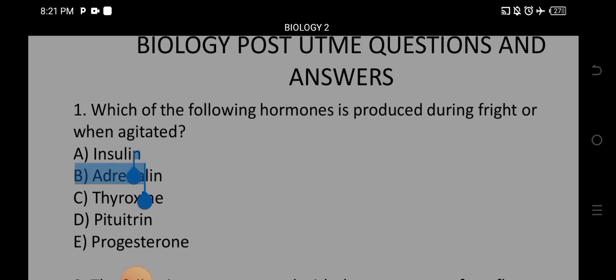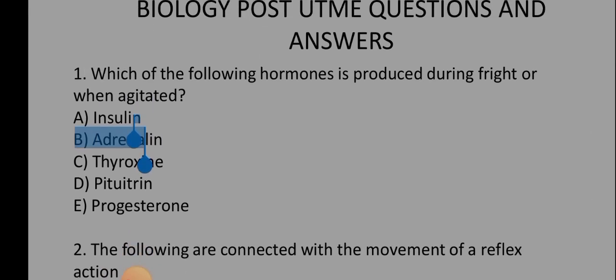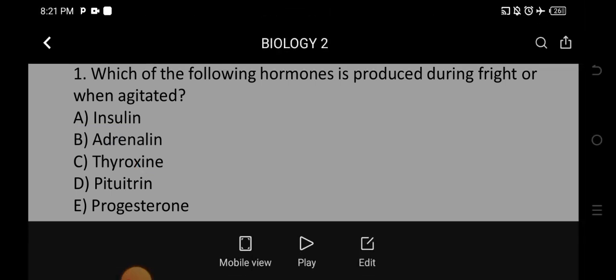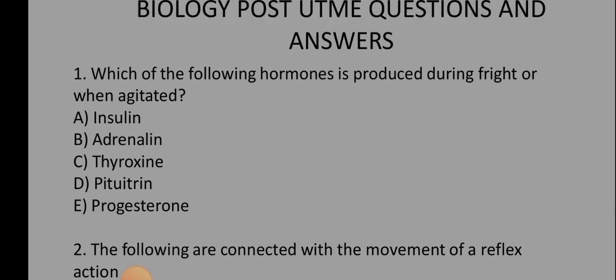Number one: which of the following hormones is produced during fright or when agitated? The correct option is option B, which is adrenaline. That is the hormone that is being produced.